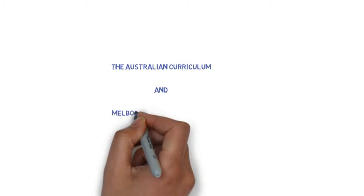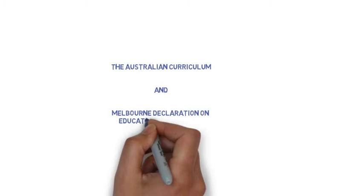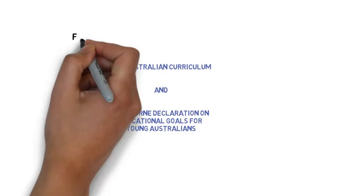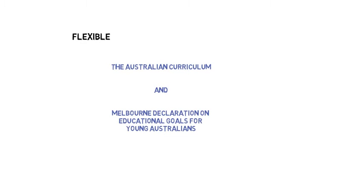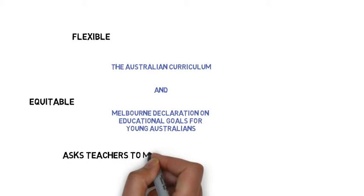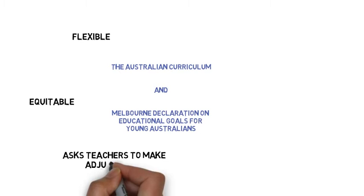The Australian Curriculum and Melbourne Declaration on Educational Goals for Young Australians are very flexible and encourage rich and equitable environments for all students. The Australian Curriculum encourages teachers to make necessary adjustments to the way in which students with difficulties are taught and the means in which they demonstrate their learning.